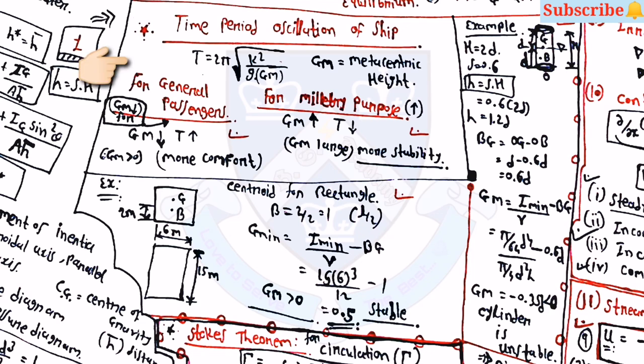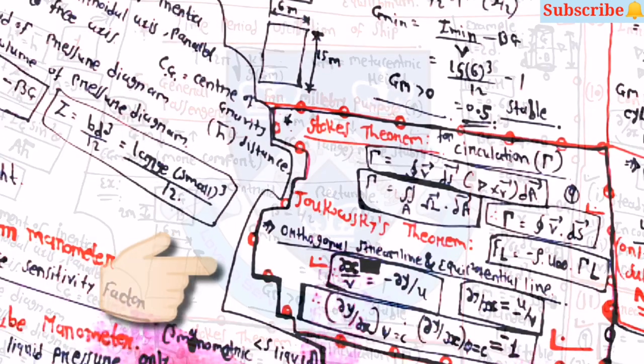The time period of oscillation is T equals 2pi into square root of k-squared by g into GM, where GM is the metacentric height. For general passenger vessels, GM should be lower and T should be higher for comfort. For military vessels, GM should be higher and T should be lower for stability. An example gives GM equals 0.5, indicating stable equilibrium.